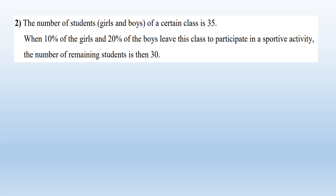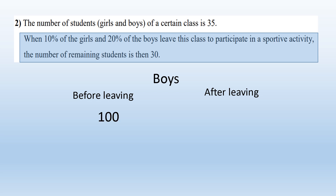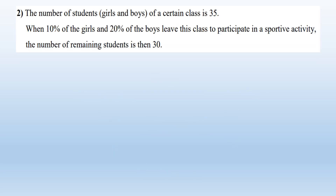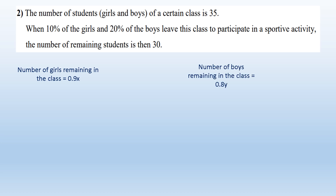For boys: suppose the number of boys before leaving was 100 — it will become 80 after, because 20 of the 100 left. In reality the number of boys is Y, so the new number of boys is 0.8Y. The new number of girls is 0.9X and the new number of boys is 0.8Y, so the total is 30: 0.9X plus 0.8Y equals 30. This is the second equation — and we can get rid of the decimal point.